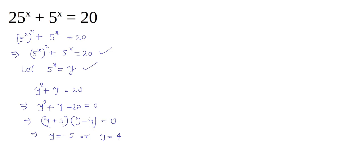We had assumed that y is equal to 5 to the power x. So now we have 5 to the power x is equal to either −5 or 5 to the power x is equal to +4. Now, 5 to the power x = −5 is not possible, because any positive number raised to any power can never be negative. So this answer will be rejected, and we accept the condition 5 to the power x equals 4.